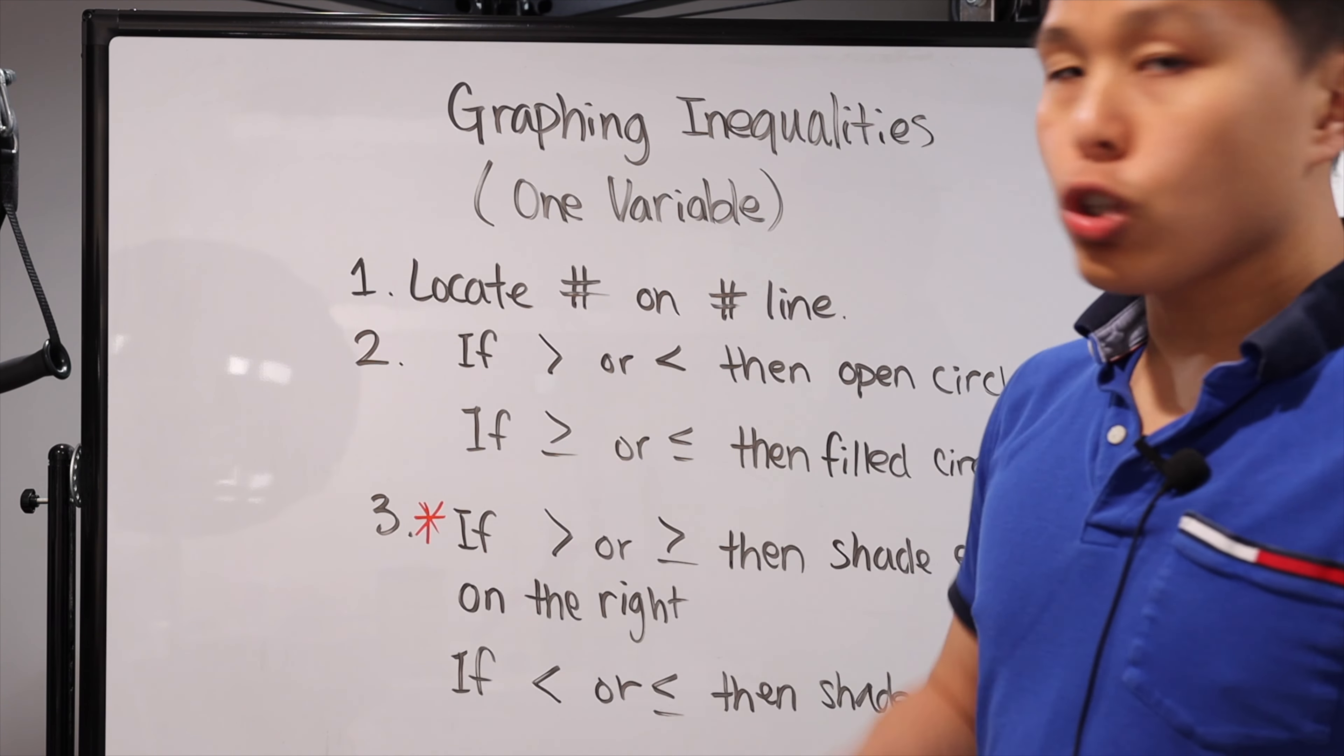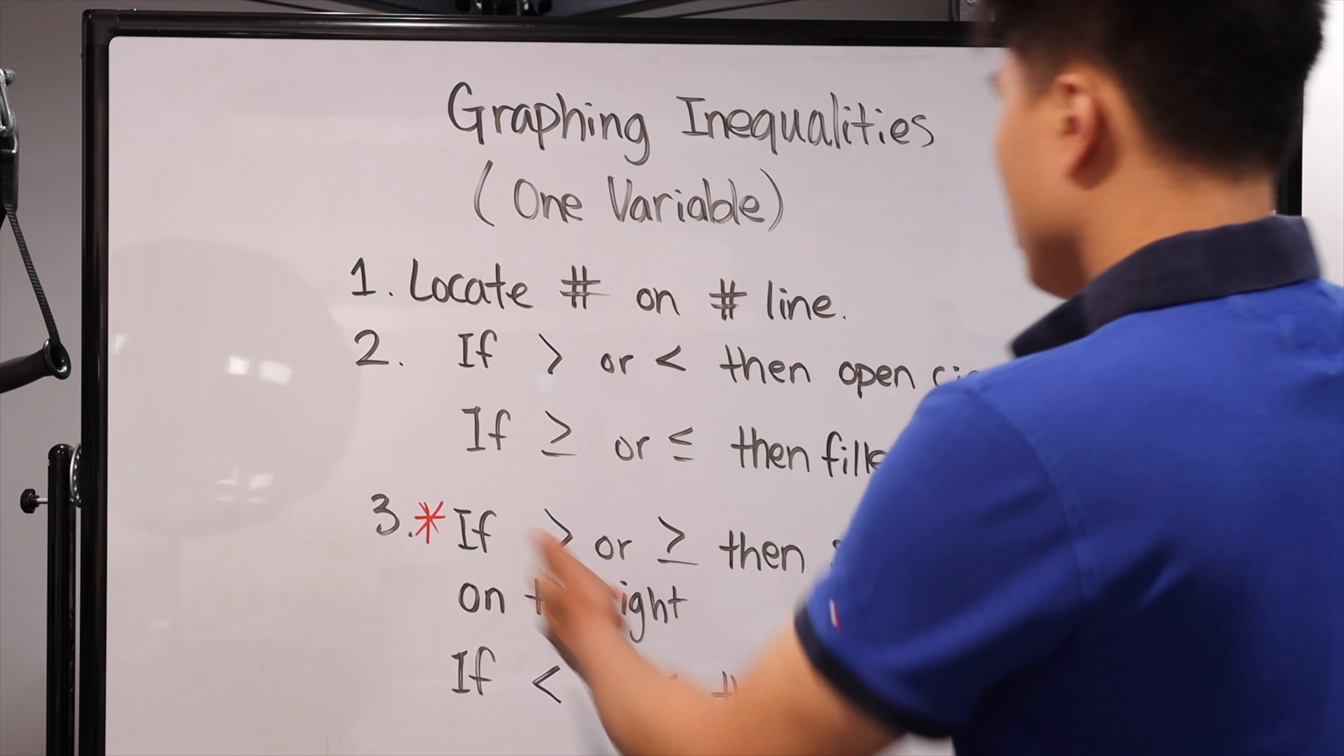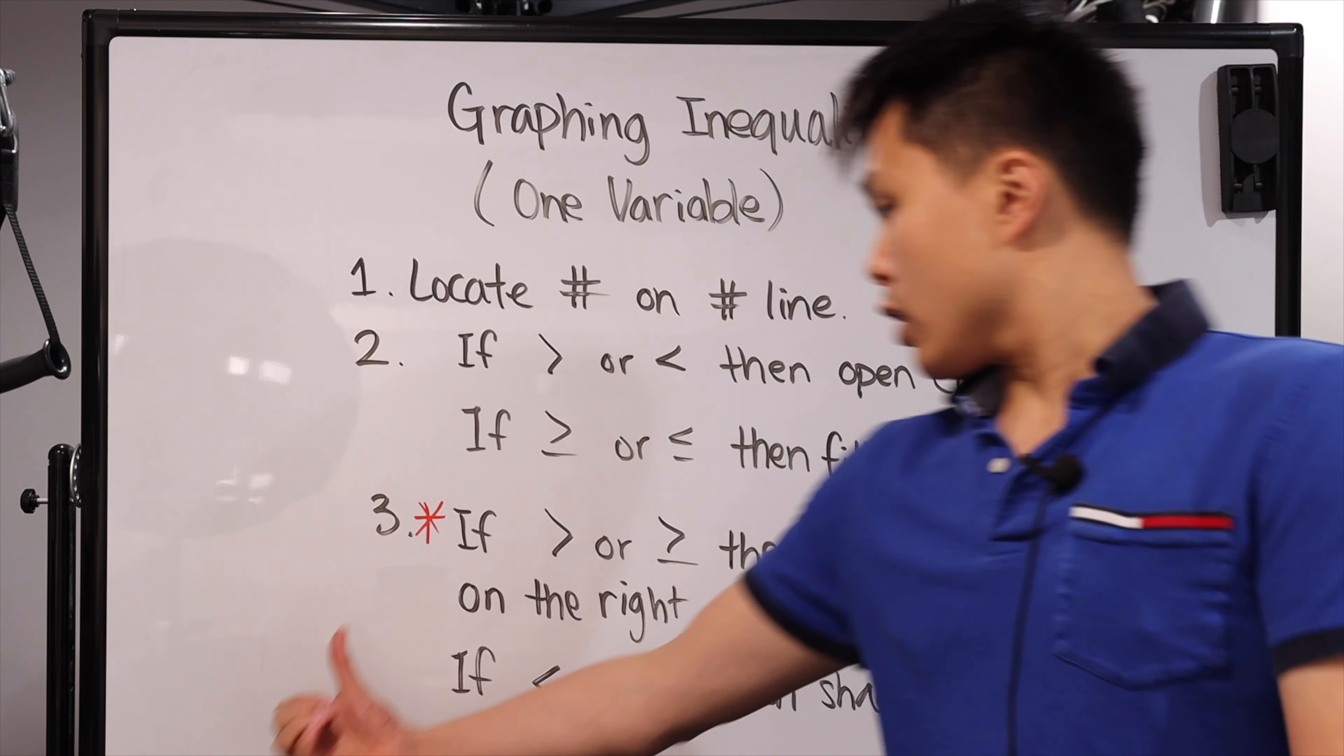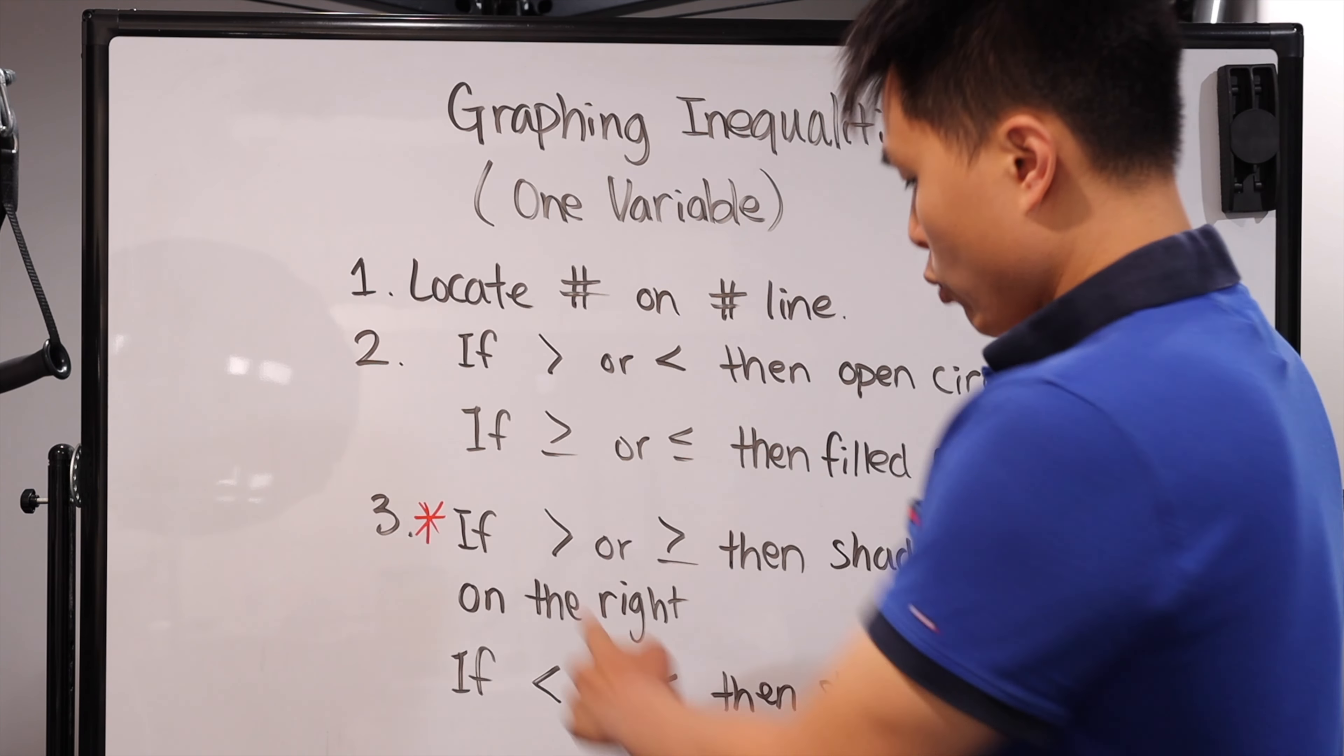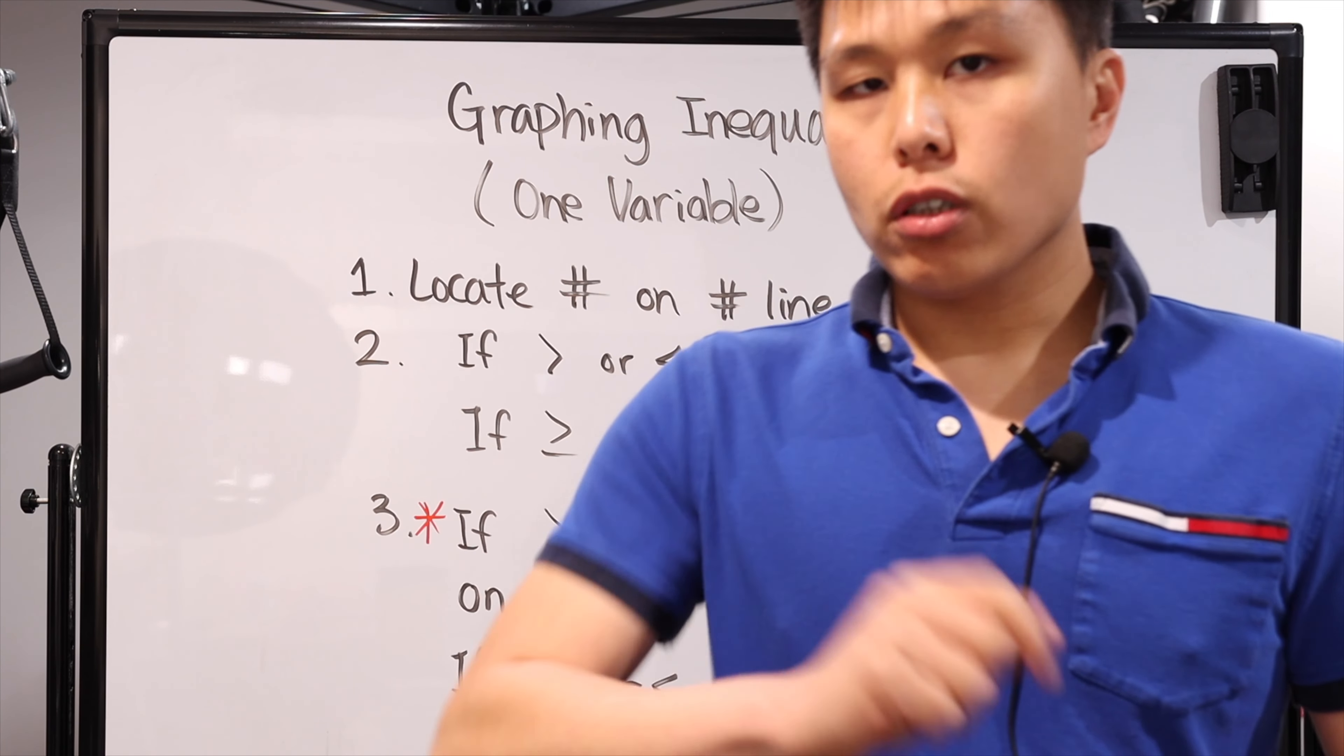Now, step three, I put a star on it because this is what irked me about it, even though it's extremely efficient. I mentioned that you think of those symbols as arrowheads. So if it's greater or greater than or equal, then you're gonna shade everything on the right because technically, it looks like it's pointing to the right. If it is less than or less than or equal, then you're shading everything on the left because once again, it looks like arrowheads and it's pointing to the left. Now, the stars indicate for me, or at least let you guys know, there's a caveat, there's a warning.